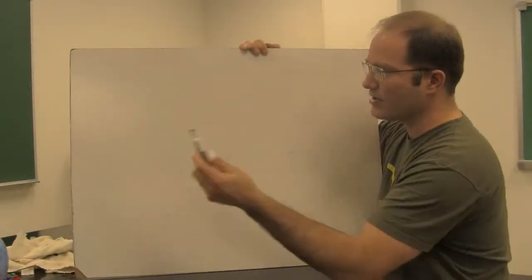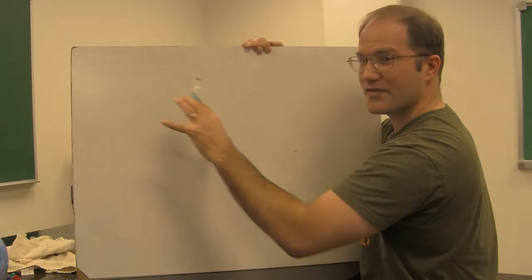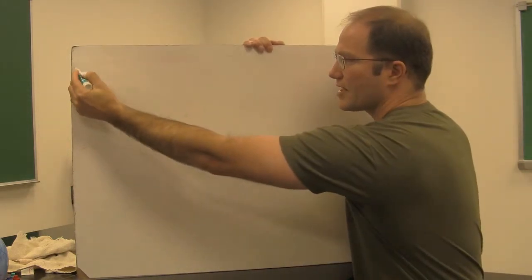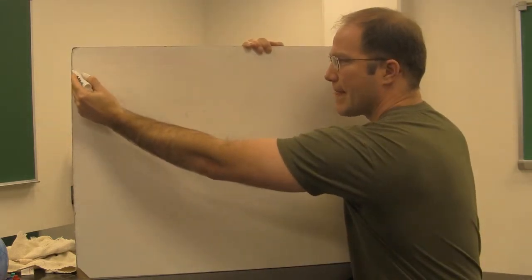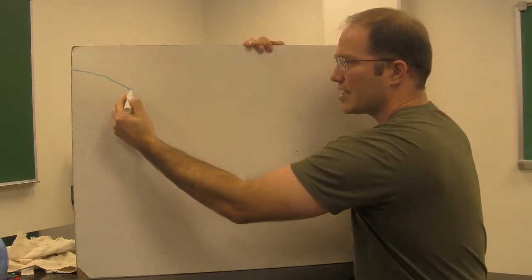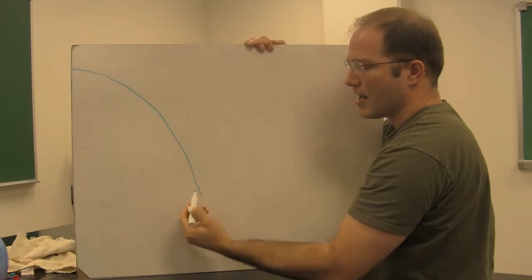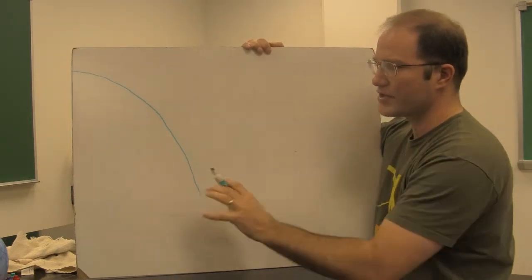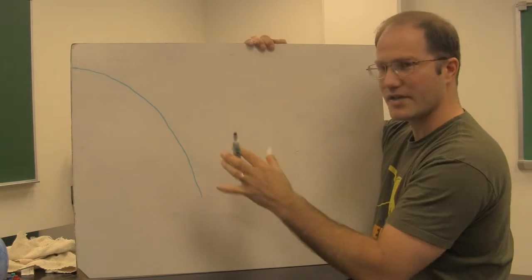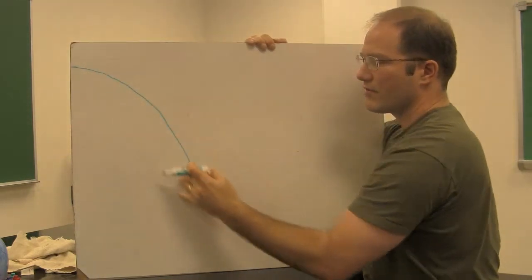If you imagine a position versus time graph — a height versus time graph of a dropped ball — it would look sort of like this. It starts at some height, and as it falls it gets faster and faster, giving you this parabolic shape determined by our kinematic equations, showing the position of the ball over time.